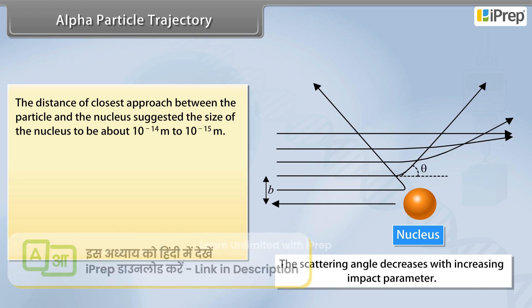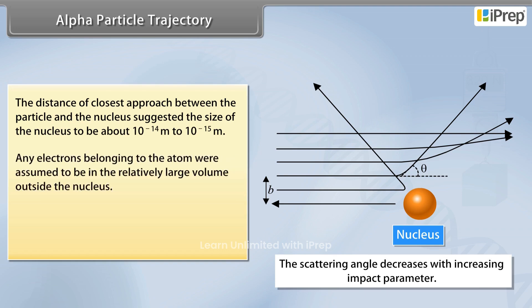Any electrons belonging to the atom were assumed to be in the relatively large volume outside the nucleus, with the atom being largely empty space. Most alpha particles thus passed through the thin foil undeflected.